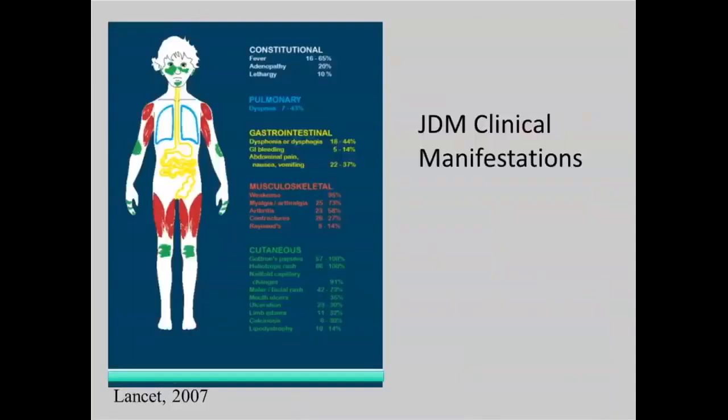This slide shows all the manifestations, all the possible features that children could have when they present and during the course of their condition. Some children will have fevers and just feel very exhausted and tired. There can be lung problems with weakness of the muscles of the lungs, difficulty with breathing, or when trying to have a child talk — sometimes it's difficult for them to get all their words out, or their voice changes and is more high-pitched, much of which is related to weakness of the muscles in those areas.